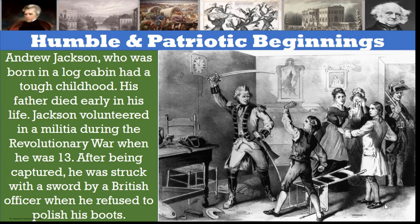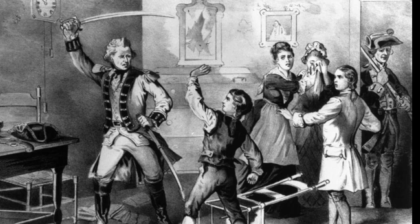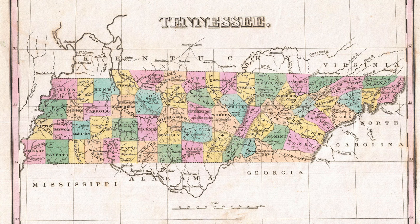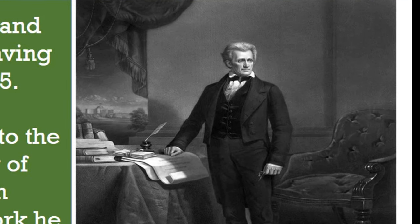His father died early in his life, and Jackson, who grew up in the South, witnessed political tyranny at a young age. Jackson volunteered in a militia during the Revolutionary War when he was only just 13. After being captured, he was struck with a sword by a British officer when he refused to polish his boots. Jackson lost his brothers and mother during the war, leaving him an orphan at the age of 15. He eventually moved to the rough western territory of Tennessee, where with determination and hard work, he became a successful lawyer and a leader of the local militia.